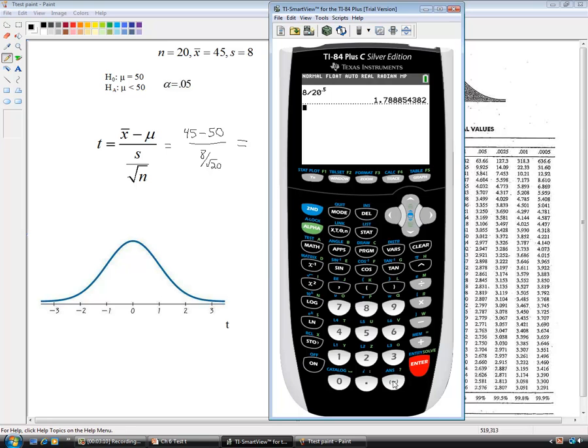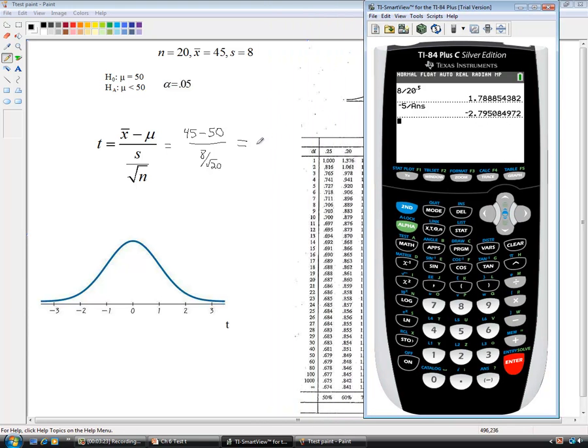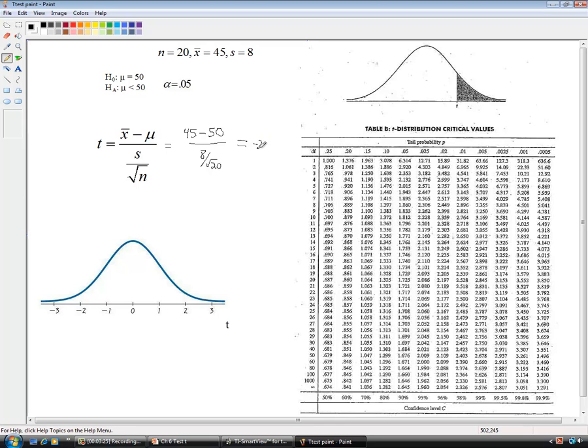So we have 8 divided by the square root of 20. So our denominator is 1.788. We're going to take negative 5 and divide by that. So negative 2.795, we'll write the whole thing down. Negative 2.795.